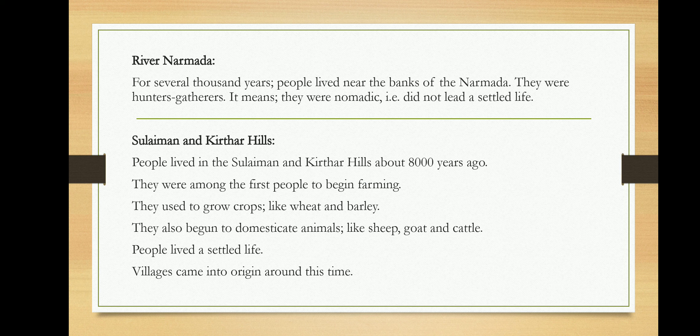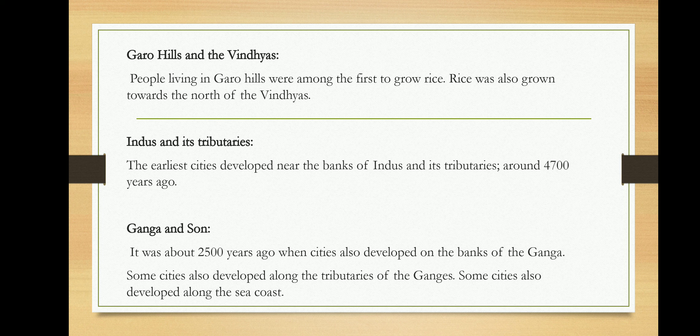Farming refers to cultivating crops such as wheat and barley. People began to live a settled life and villages started coming into existence. The people in the Garo Hills and the Vindhyas were the first to grow rice. On the rivers of Indus and its tributaries, people started developing cities about 4,700 years ago. Bigger cities also came up on the banks of the Ganga, and some cities developed along the seacoast.